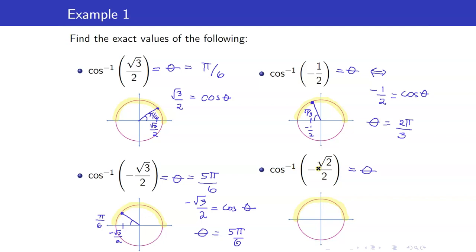Lastly, for cosine inverse of negative square root of 2 over 2: this means negative square root of 2 over 2 equals cosine of theta. Negative square root of 2 over 2 corresponds to a reference angle of pi over 4. Therefore, our theta is pi minus pi over 4, which equals 3 pi over 4.